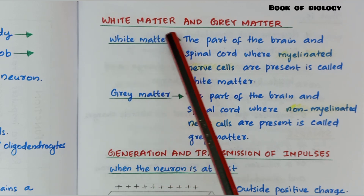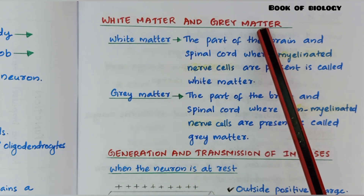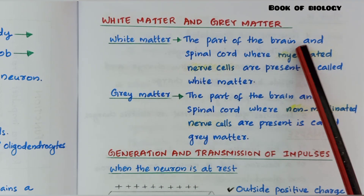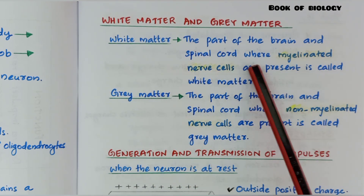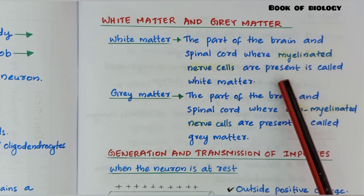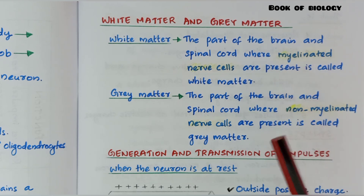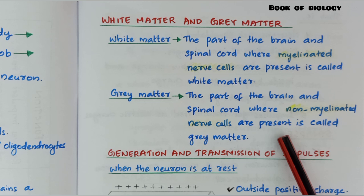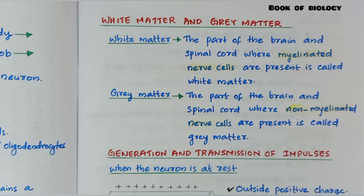White matter and gray matter. White matter: the part of the brain and spinal cord where myelinated nerve cells are present is called white matter. Gray matter: the part of the brain and spinal cord where non-myelinated nerve cells are present is called gray matter.